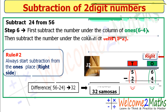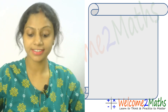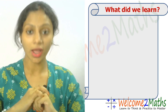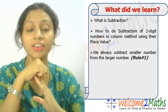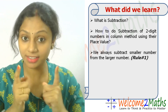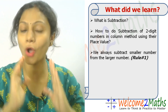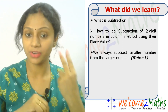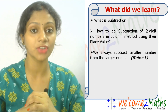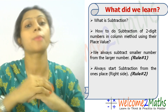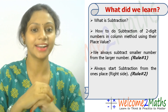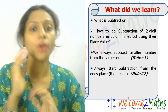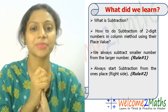Before the end of today's class, let's recap what we learned. We learned what subtraction is and how to do subtraction of two-digit numbers using place value in the column method. We learned two rules: number one, always subtract the smaller number from the larger number; number two, always start subtraction from the ones place, from the right side.